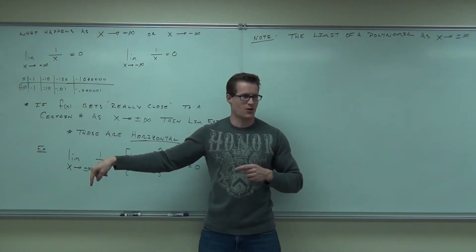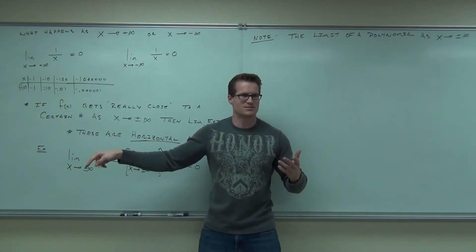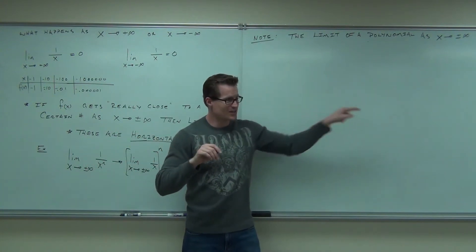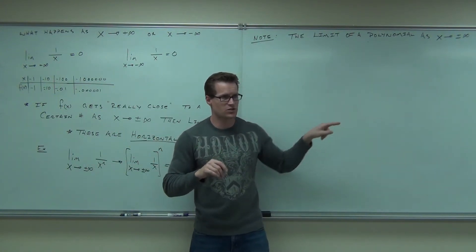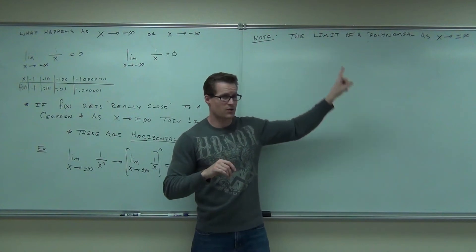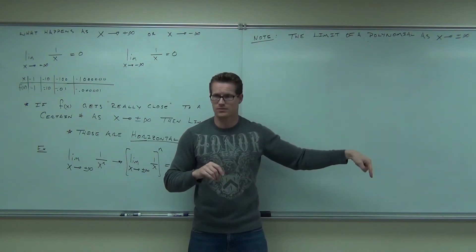Going this way forever, or going this way forever. You follow me on that one? That's what I just said. If you're going this way on the x-axis, your function is doing one of two things: going this way forever, or going this way forever. That's what this says.